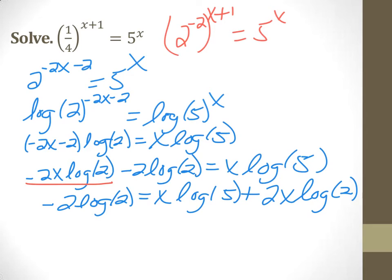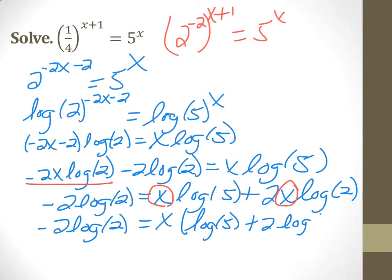Now on the right, and I know that's really ugly, we've got a variable in both of these terms. Let's go ahead and factor that out. The log on the left with its coefficient remains the same. On the right, factor an x out. What times x gives you the first term? Log of 5. What times x gives you the second term? 2 log of 2.